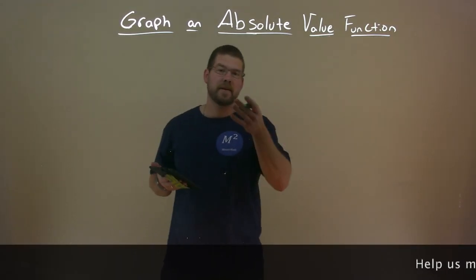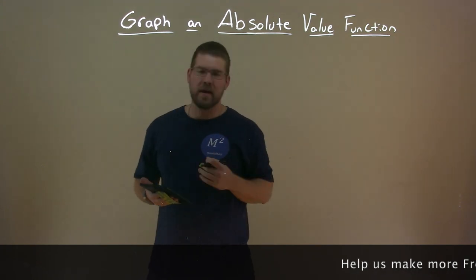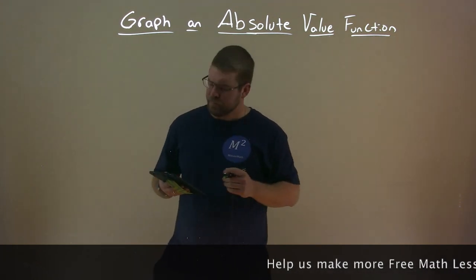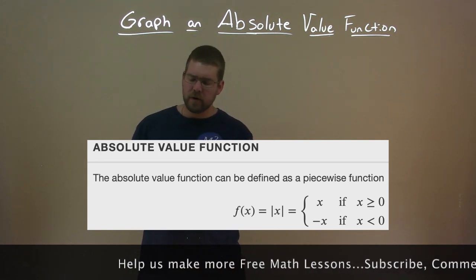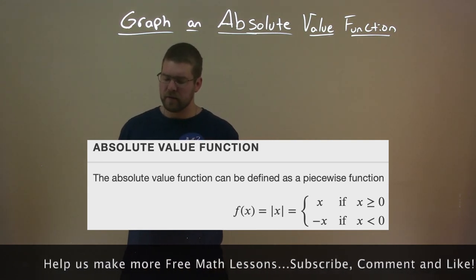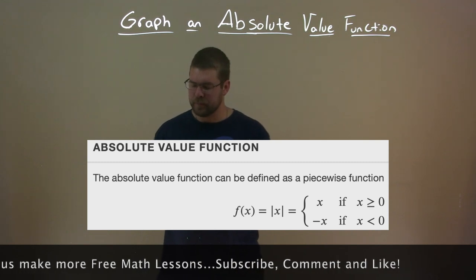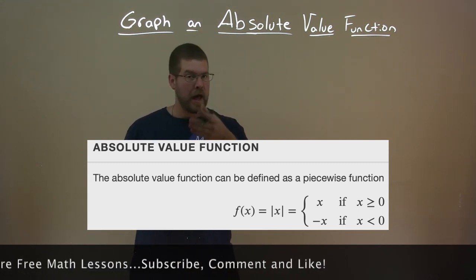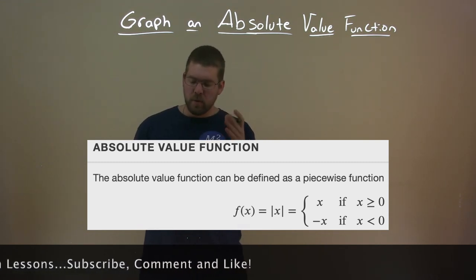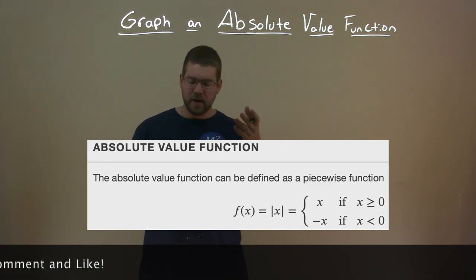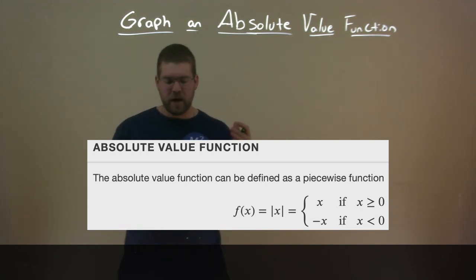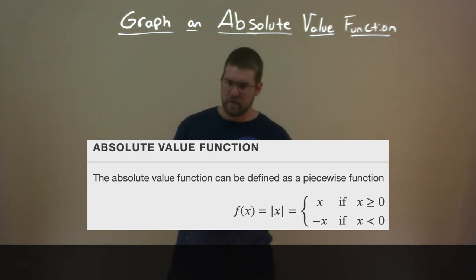So what is an absolute value function, or as I like to call it, the ABS? Well, the absolute value function can be defined as a piecewise function. f(x) equals the absolute value of x, which is equal to - here's the piecewise part - x if x is greater than or equal to 0, negative x if x is less than 0.